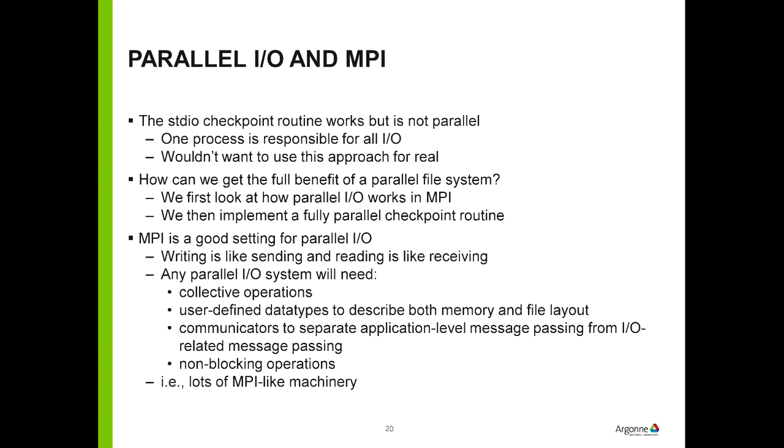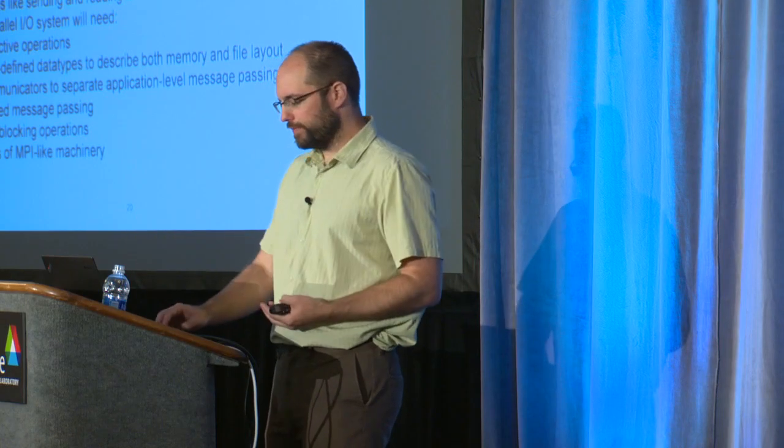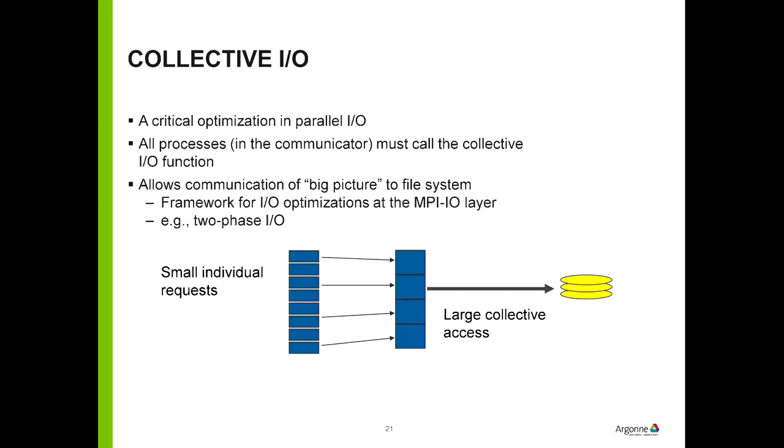That's the simple sending-it-all-to-rank-zero approach. When you think about a message passing interface having an I/O component, it might seem a little funny at first. But if you think about sending a message as kind of like writing to a file, and receiving a message as sort of like reading from a file, the same things that made MPI so powerful — data types and collectives — have a role to play in file systems too. Collective I/O lets us turn what looks like lots of tiny individual requests into something a little friendlier to the file system.